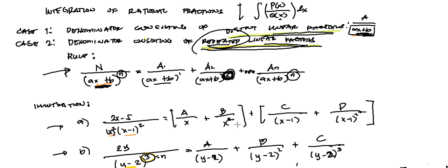Welcome back. We are still in our second example for Case 2, wherein our denominator has a repeated linear factor.